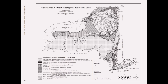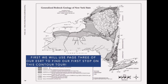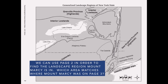We're going to be using our Earth Science reference table to locate some places in New York. The first one is going to be Mount Marcy in upstate New York. We'll flip back to page two of our ESRT to figure out what landscape region Mount Marcy is in, thinking back to page three to determine the landscape region. You probably were able to locate it as being in the Adirondack Mountains.